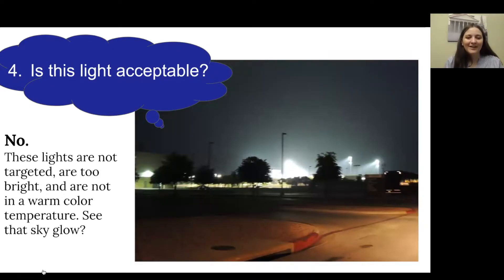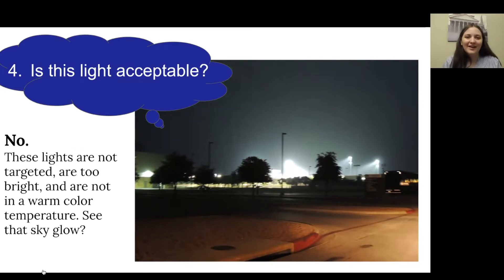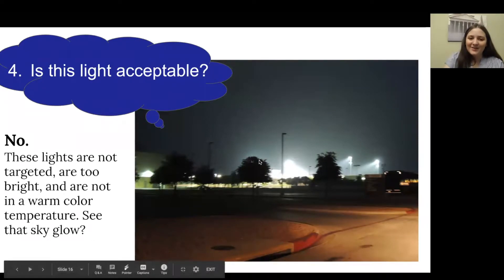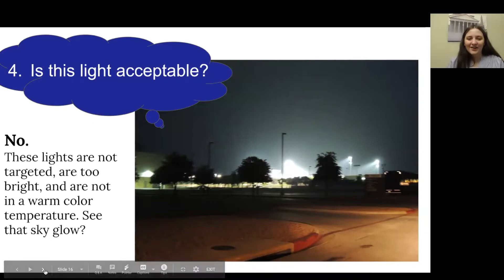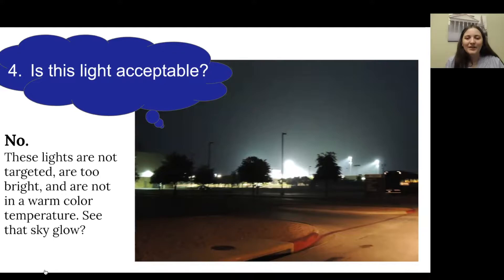Number four: these lights are not acceptable. We're standing pretty far away, but we can still see all the light they emit. When evaluating and improving a light, we need to make sure we aren't able to see it from far away — that's what creates light trespass and glare. We want to add a light shield and make sure they're not too bright for the surface. We can also see all that sky glow — light going from the fixtures up into the night sky. These look like field lights, meant to illuminate the field, but too much light is going upward.